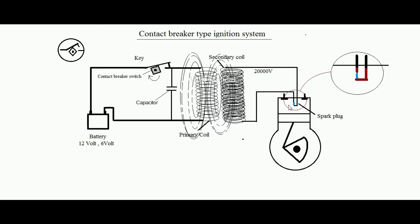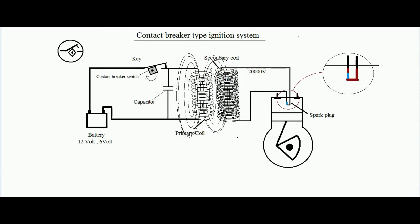Since a higher voltage between the electrodes is favorable for spark development, this is the reason that when key K opens, the spark is developed at that moment. The capacitor also serves another important function in the primary circuit.